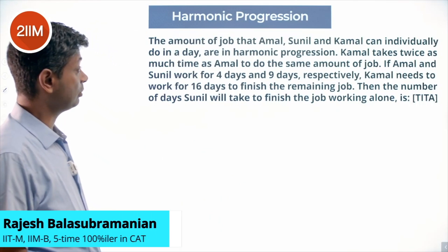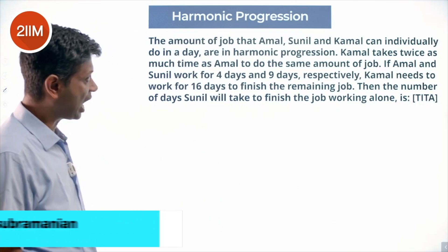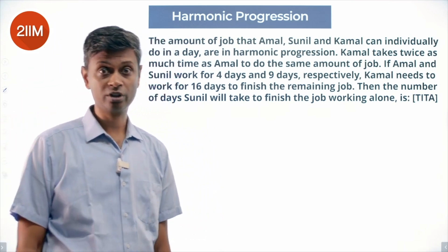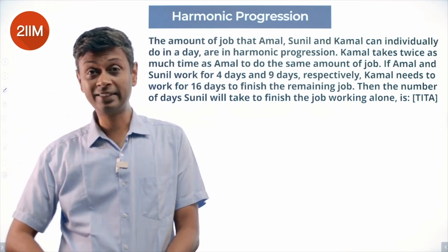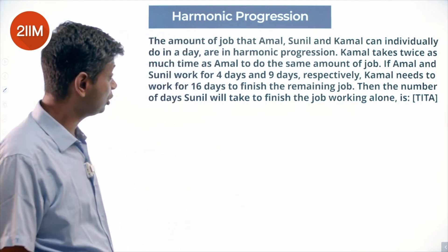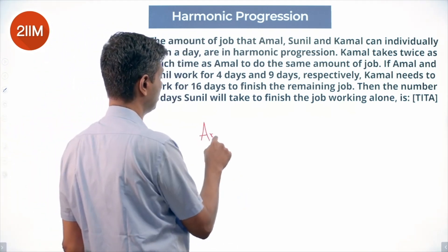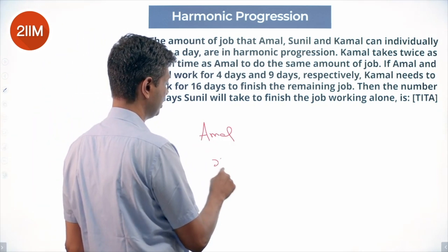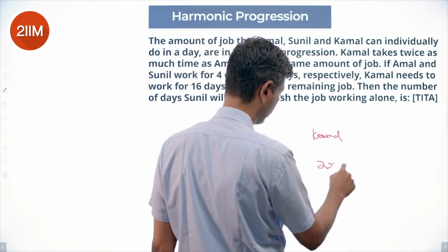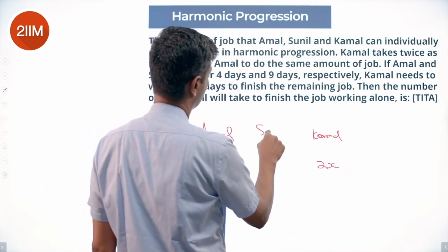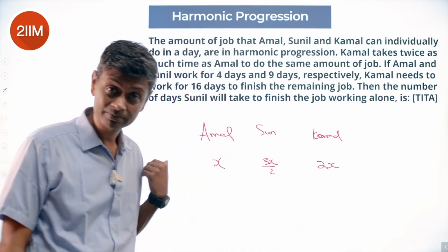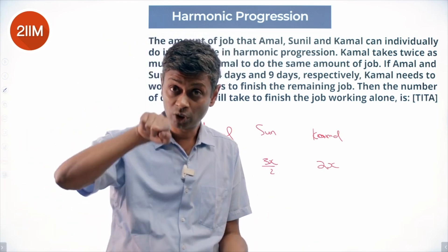The amount of work that Amal, Sunil, and Kamal can individually do in a day are in harmonic progression. This means the number of days taken should be in arithmetic progression. Kamal takes twice as much time as Amal, so if Amal takes x days, Kamal takes 2x days, and Sunil should take 3x/2 days — in between — since the days must be in AP.